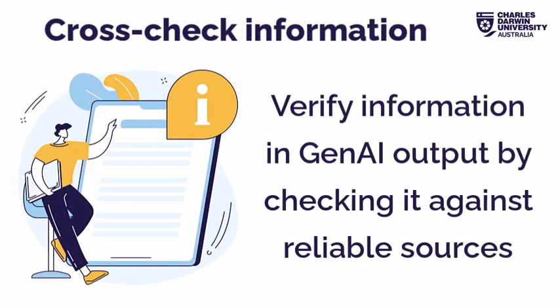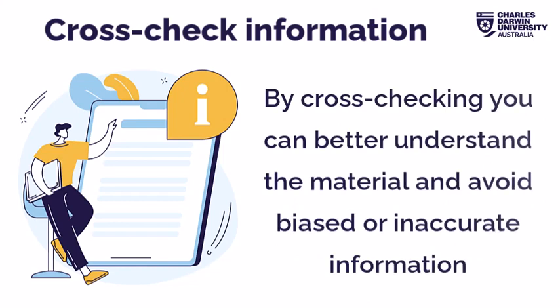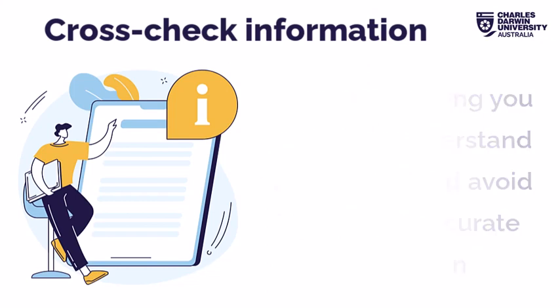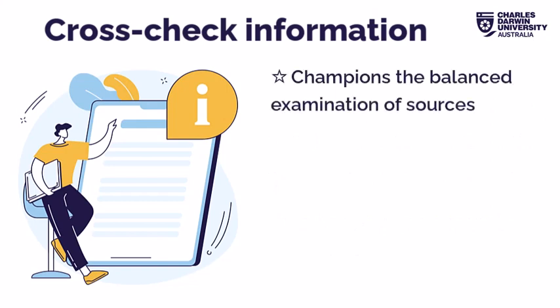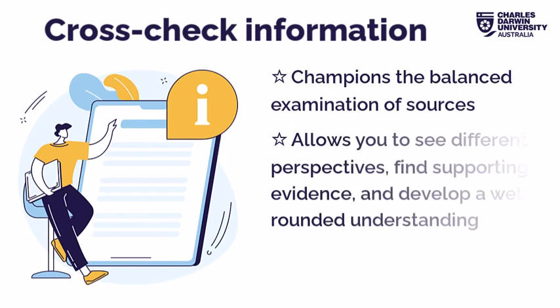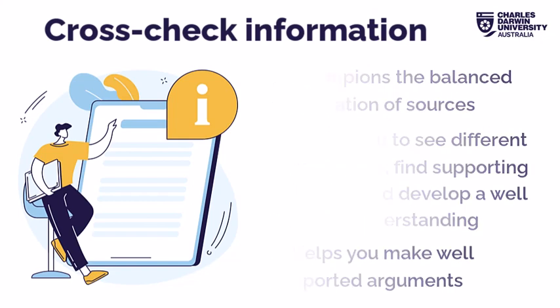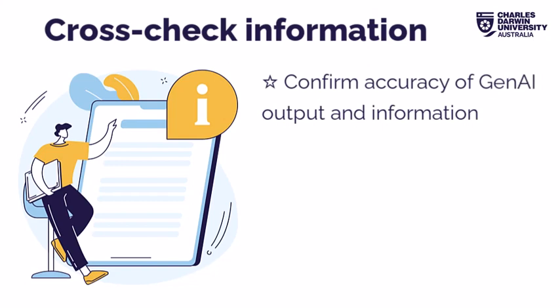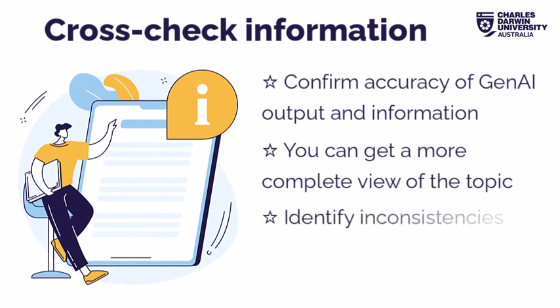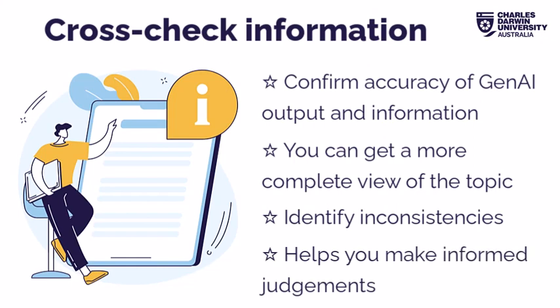To make sure the information you receive from Gen AI tools is correct, it's important to verify it by checking it against reliable sources. By verifying and cross-referencing the information, you can better understand the material and avoid relying on inaccurate or biased information. Critical thinking champions the balanced examination of sources. Cross-checking allows you to see different perspectives, find supporting evidence and develop a more well-rounded understanding. Cross-checking with trustworthy sources can confirm accuracy and help you identify any inconsistencies or differences, allowing you to make informed judgments.